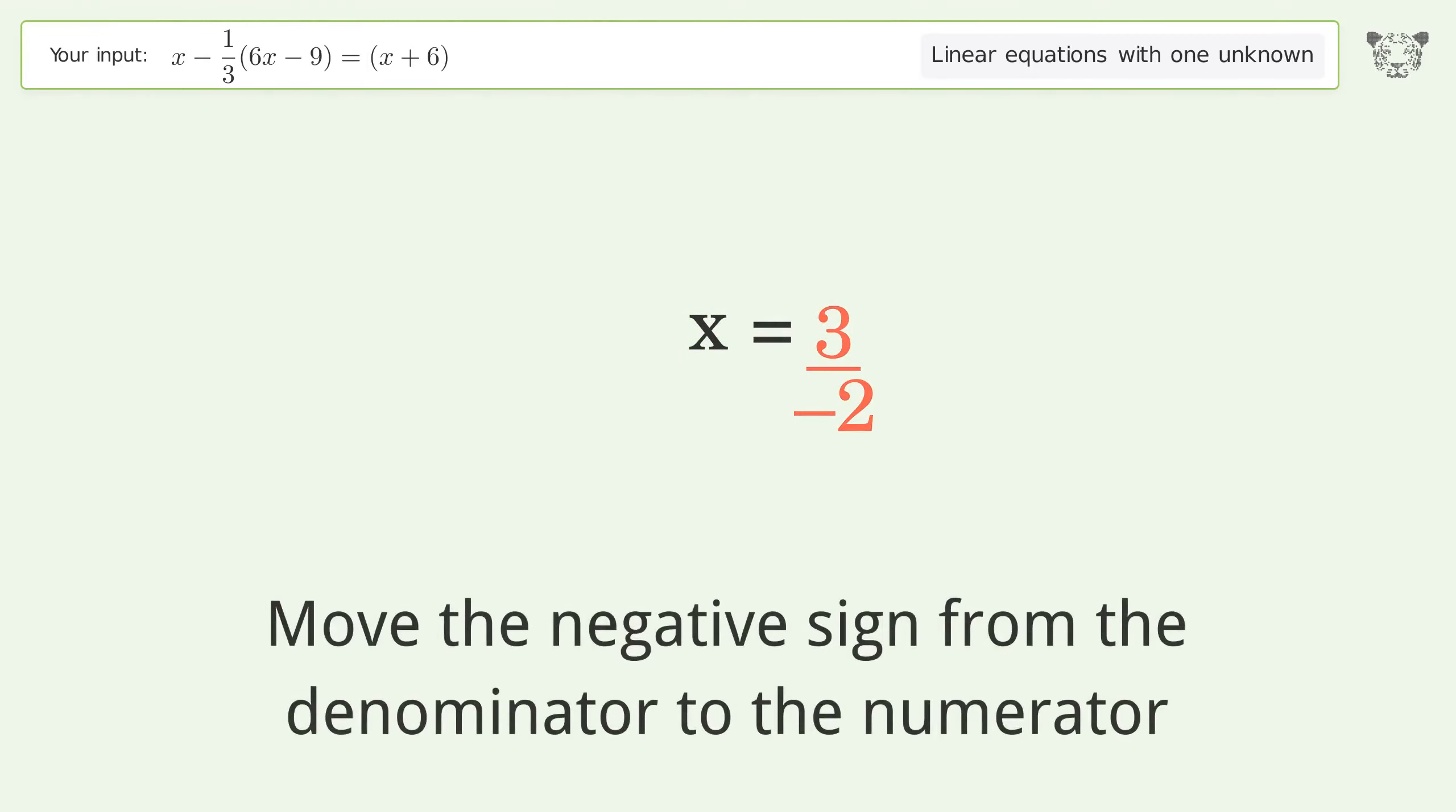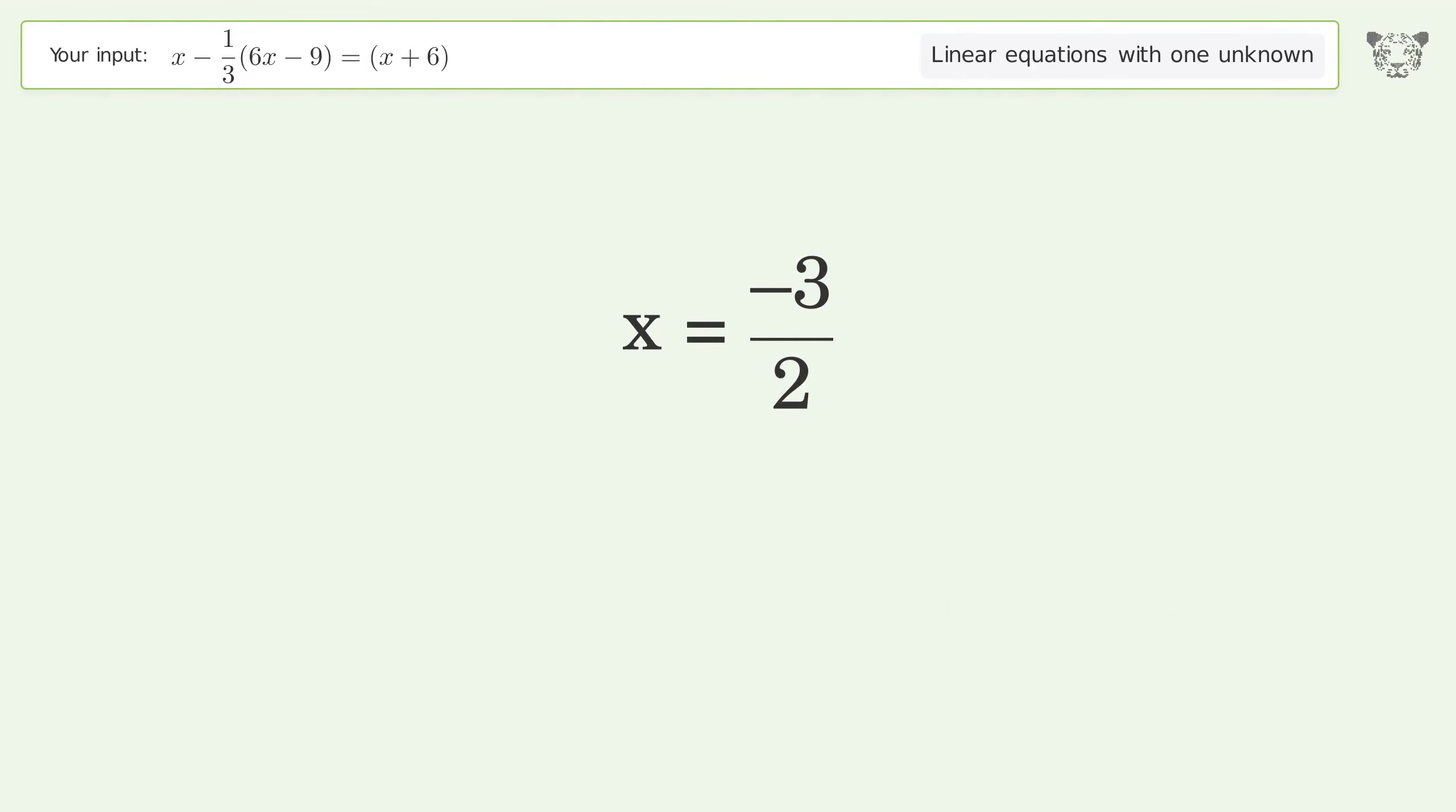Move the negative sign from the denominator to the numerator. And so the final result is x equals negative 3 over 2.